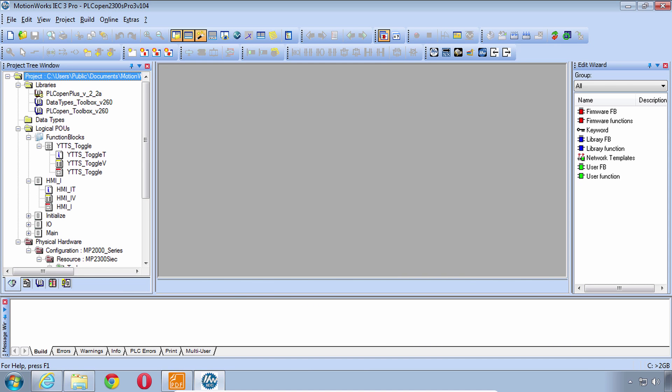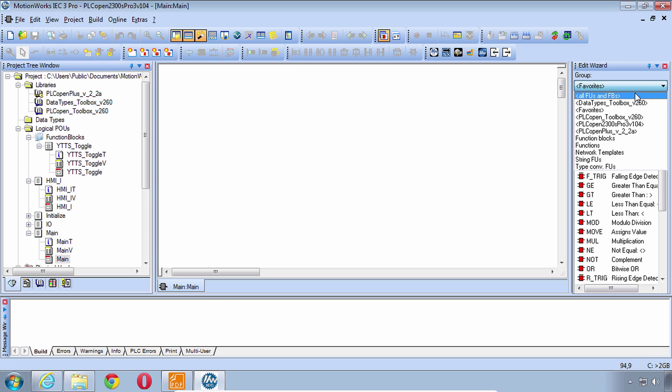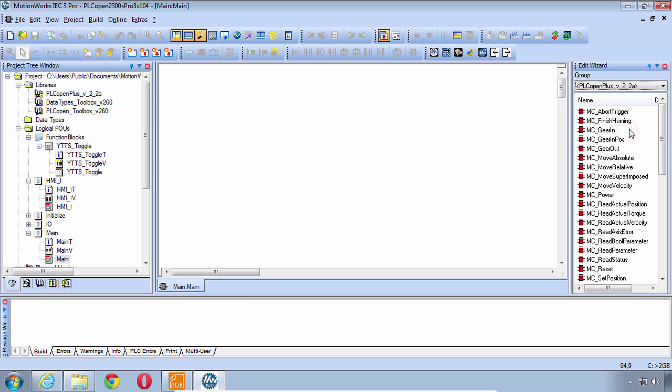Now if you go over to the class project or just even start a new project you will see what we call firmware library called PLCopenPlus here in the project tree. Go ahead if you want to follow along here and open up a POU such as the main POU, really any POU, and you will see in the edit wizard the PLCopenPlus group of instructions. All of these instructions start with the prefix MC underscore, those are the PLCopen instructions.